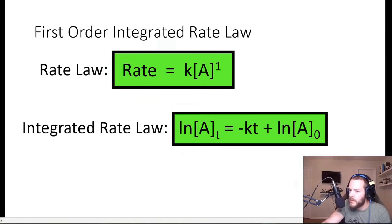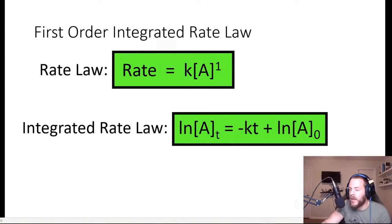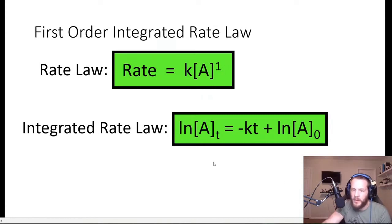If you don't know what the natural log is, a logarithm is basically a power that you have to raise a fixed base number to in order to achieve whatever you're taking the logarithm of. Every logarithm has a base. One of the most common logarithms is the natural logarithm, which has a base of e. E is a mathematical constant, also called Euler's number.